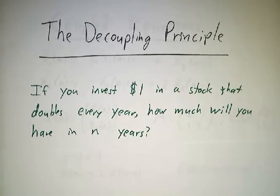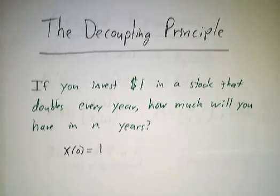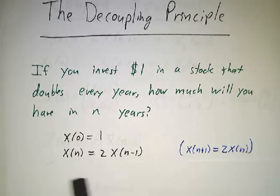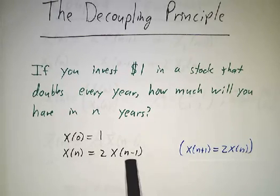Let's suppose that you have a dollar and you invest it in some stock that doubles every year, a darn good investment, and you wonder how much money you'll have after n years. Now we write this in terms of equations. We say x of n is how much money you have after n years, and our initial condition is you start off with one dollar.